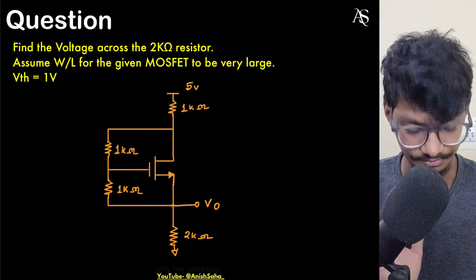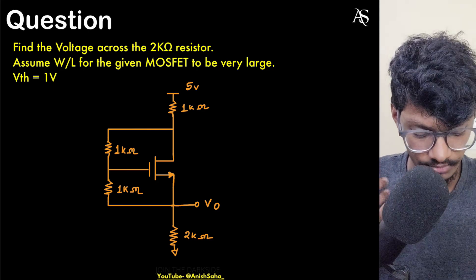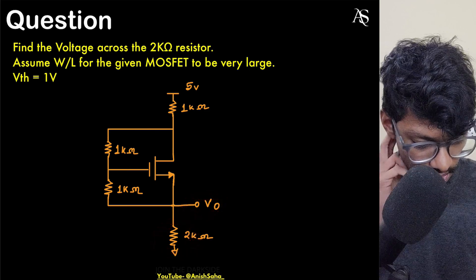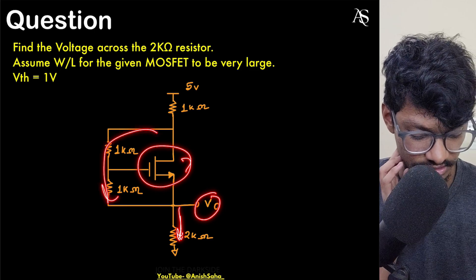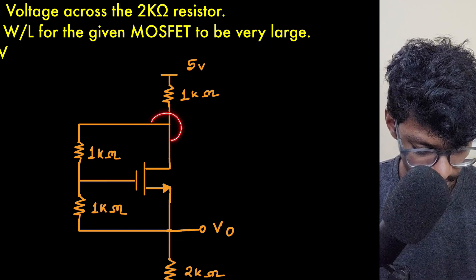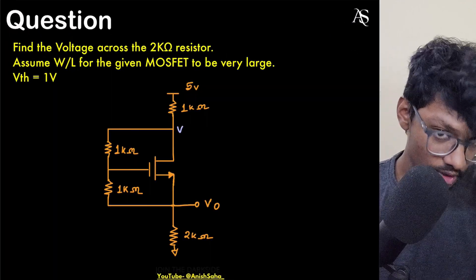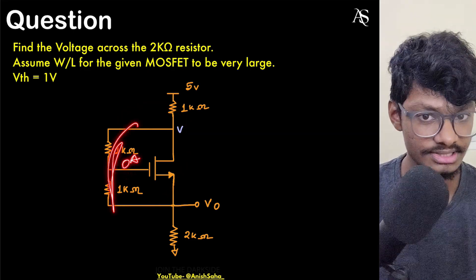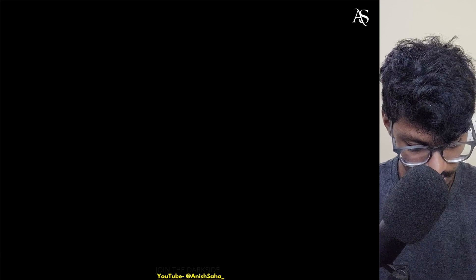So how do we solve these types of questions where everything is unknown? We start by assuming voltages at nodes. To find the voltage across the 2kΩ resistor, I need the current through it, which means I need the MOSFET current. The key observation: this is a MOSFET, so the current through the gate terminal is zero. That means these two resistors are in series.